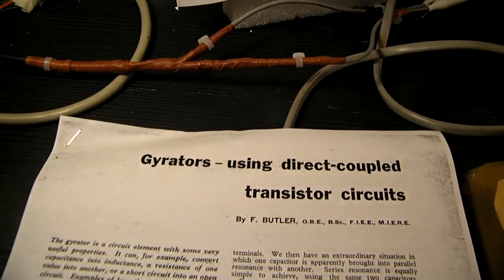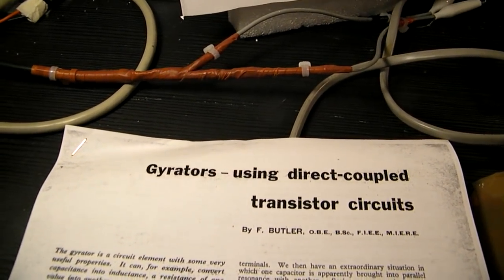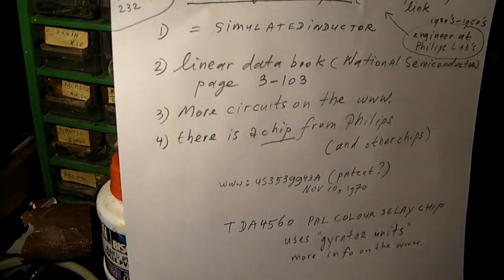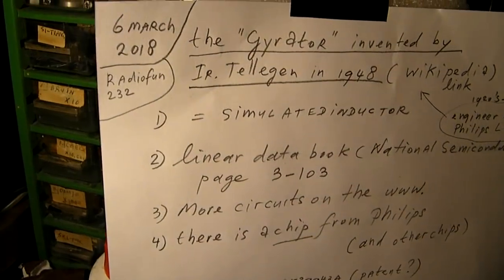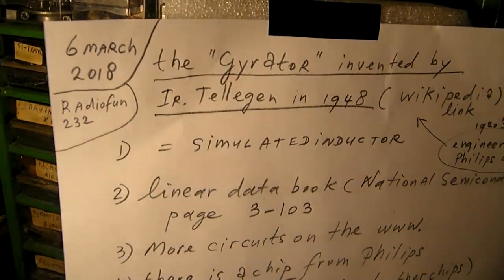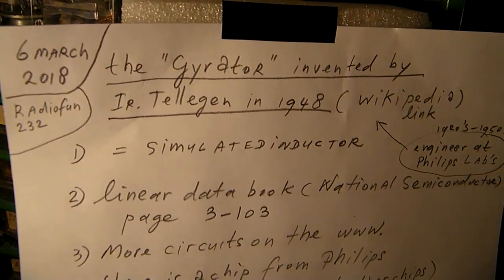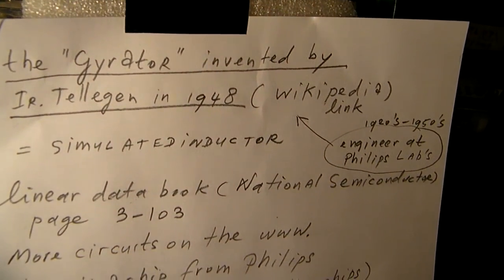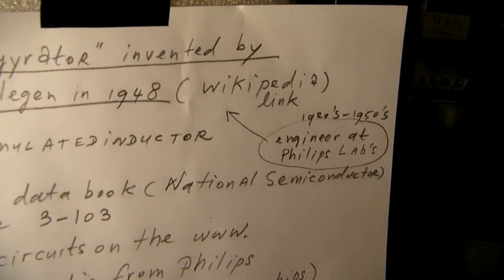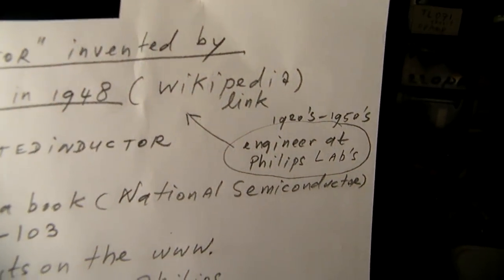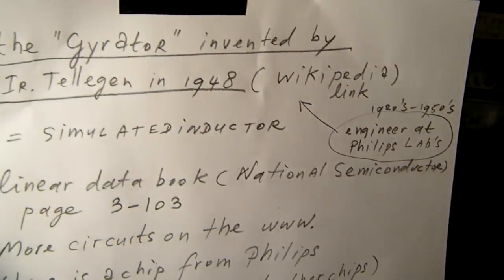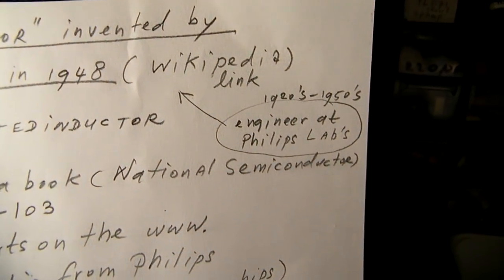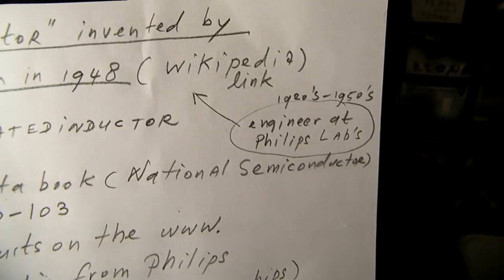In this video, something about gyrators. The gyrator was invented by engineer Tellegen in 1948 and he called it a fifth electronic element. You can find much more information on Wikipedia. Mr. Tellegen was an engineer at the Philips laboratory in Eindhoven in the Netherlands.